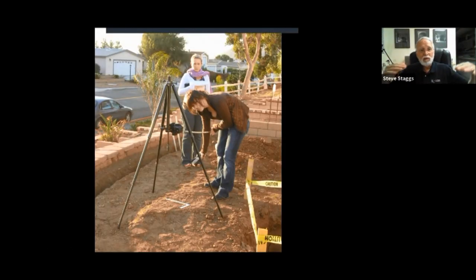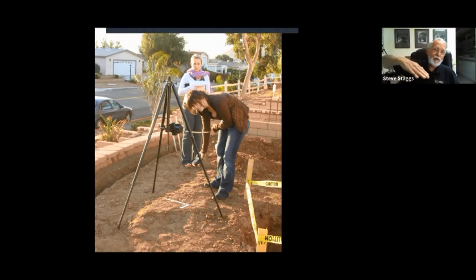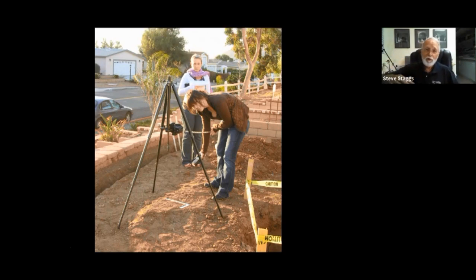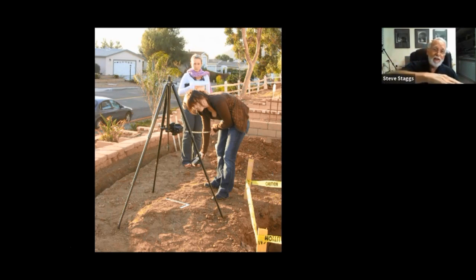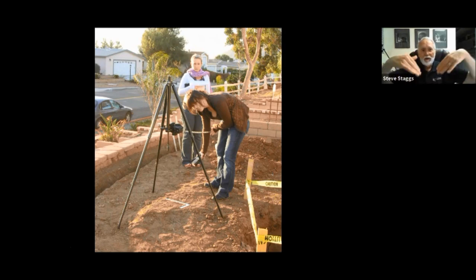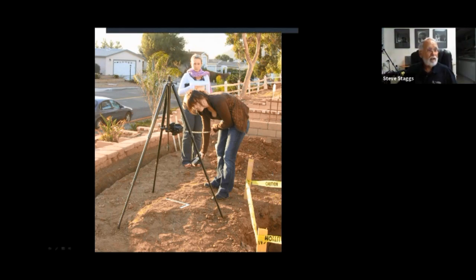How do you know what angles to use? The deeper the impression, the steeper the angle is going to need to be. If it's in the snow and it's a deep impression and you use too low of an angle, the light won't even get to where the impression is. So you angle the light depending on how deep the impression is. Let's see one more explanation of how to do this.